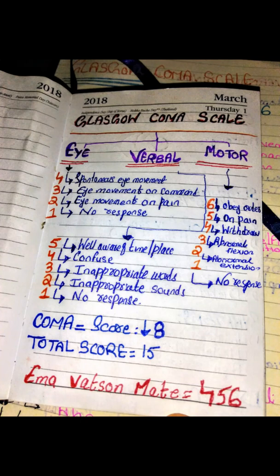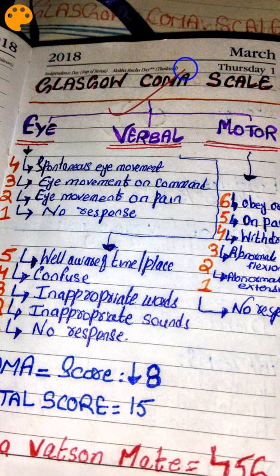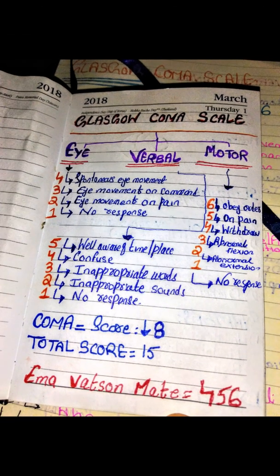Hello guys, welcome to MBBS Made Easy. Our topic today is the Glasgow Coma Scale. This scale is used to assess consciousness. I made a mnemonic to learn the different components of the Glasgow Coma Scale.